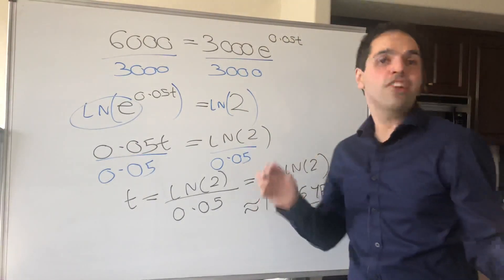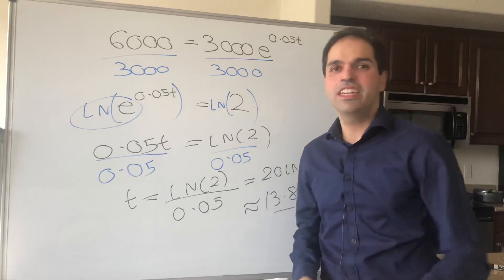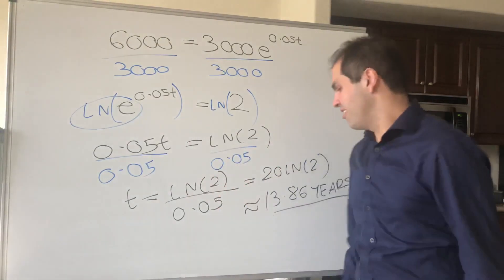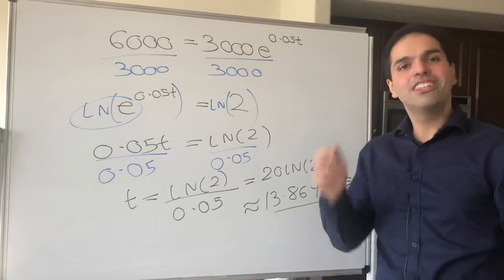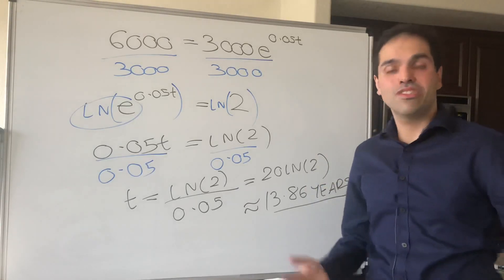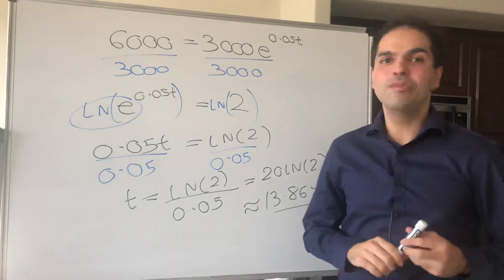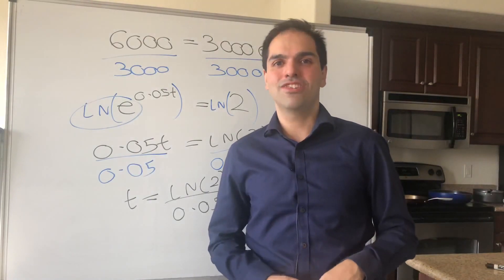And here's the amazing thing: it doesn't matter how much money you put initially, if you put 3,000 or a million dollars, for all of you, it would take 13.86 years for your money to double. That is the beautiful thing about that exponential model.